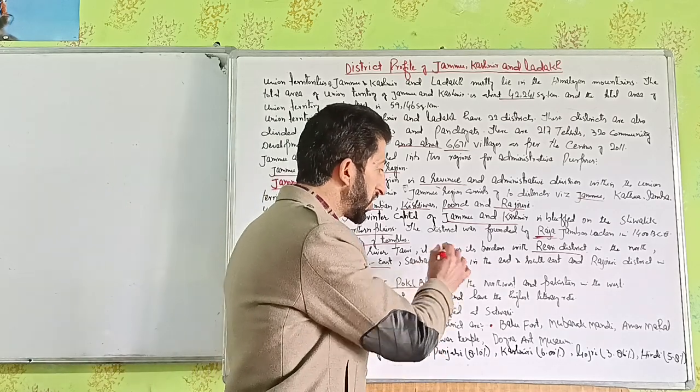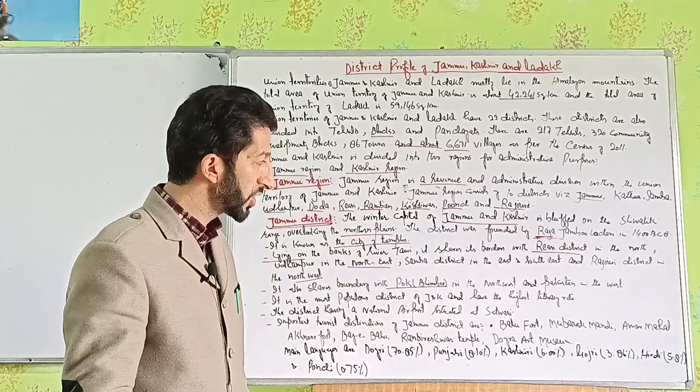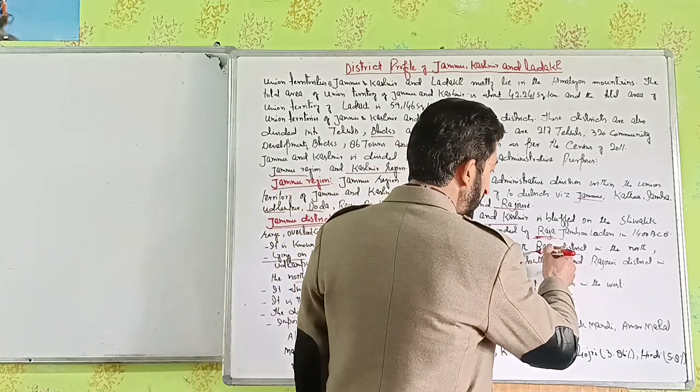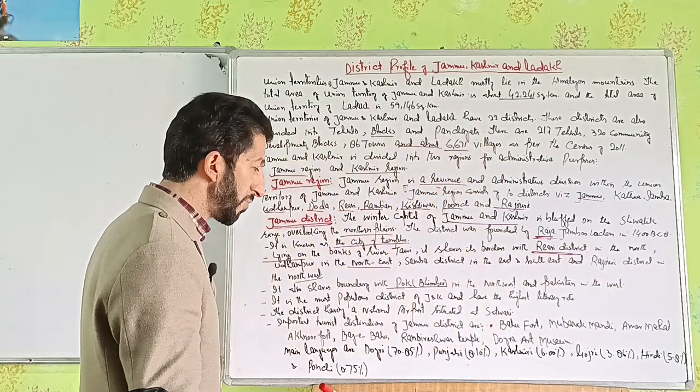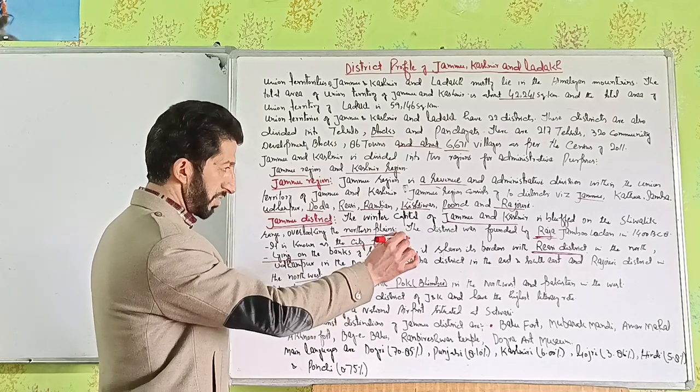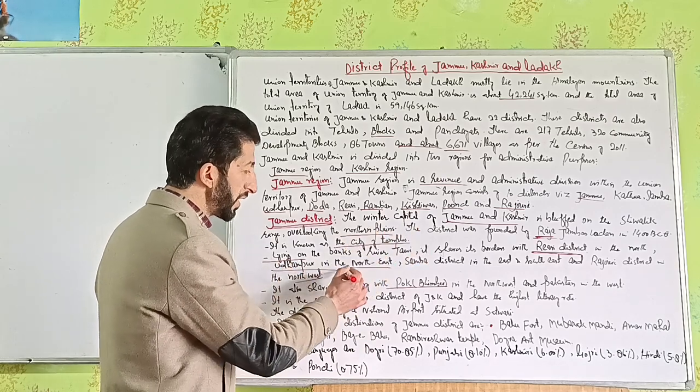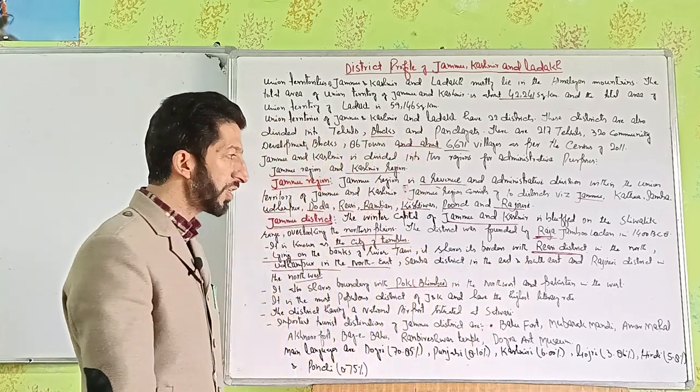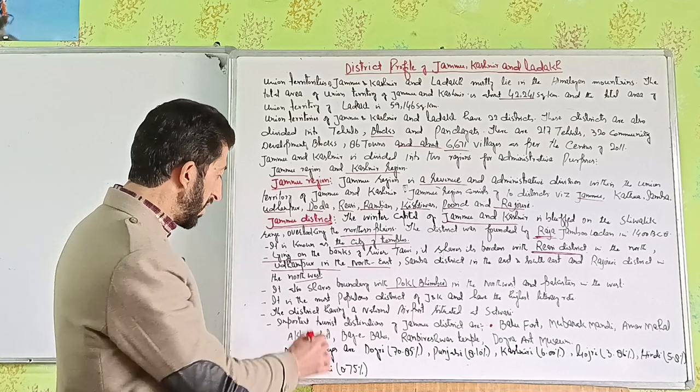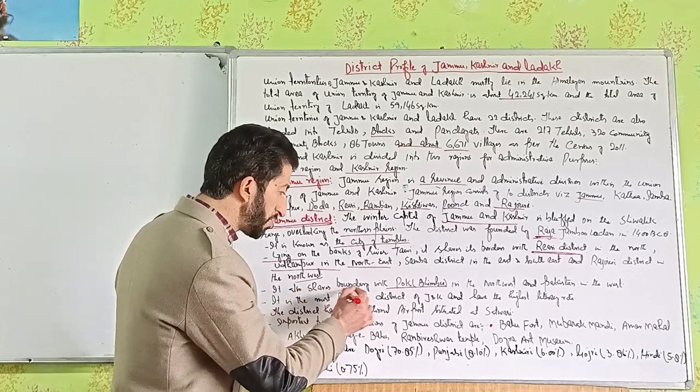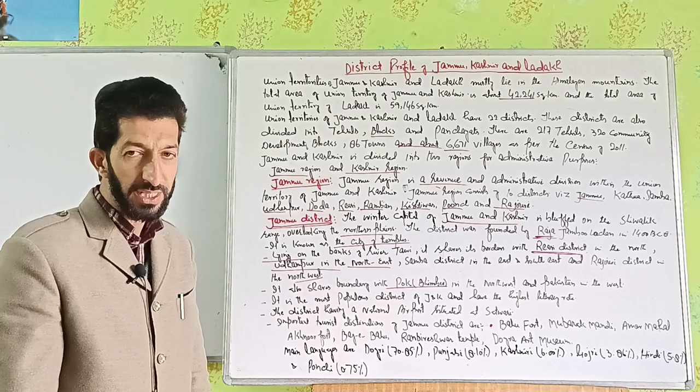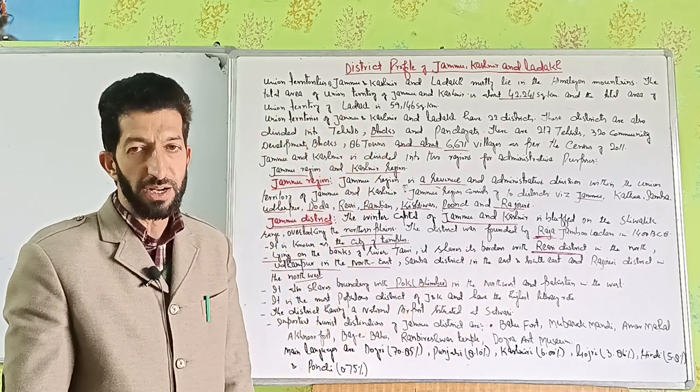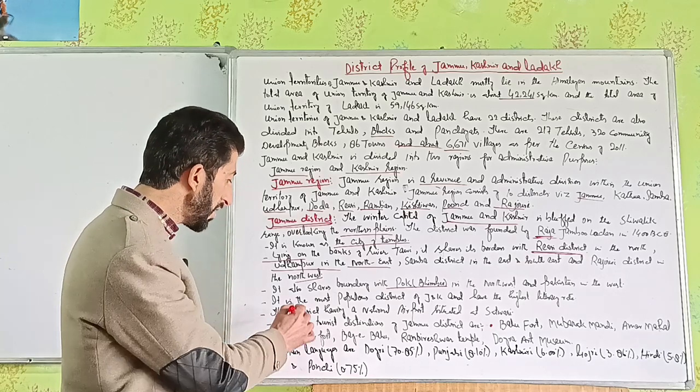Jammu district shares borders with Kathua, Reasi district in the north, Udhampur in the northeast, Samba district in the east and southeast, and Rajouri district in the northwest. It also shares boundary with Pakistan Occupied Kashmir in the northwest and Pakistan in the west.